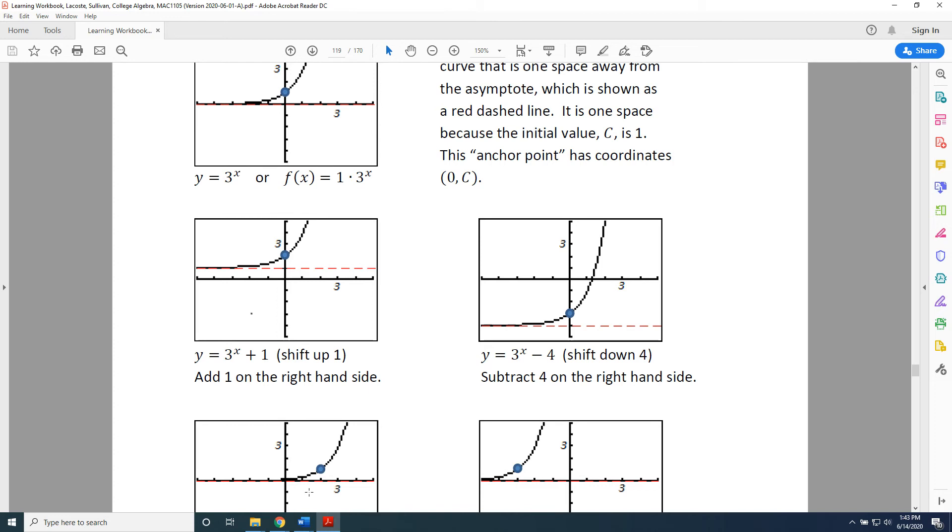So, we're going to replace the x in this equation, y = 3^x, with an x - 2. This gives us the new equation, y = 3^(x - 2). Remember, horizontal shifting is the reverse of what you would expect, so the right would be x subtract something.